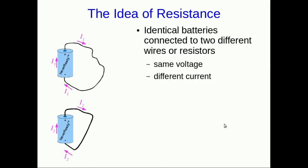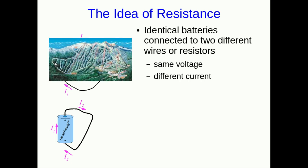So now we come to the idea of what resistance is. If you take two identical batteries and you connect them to two different wires or resistors, so you've got the same voltage being applied because these are identical batteries, but you're going to find that you will have different currents. Remember, the battery doesn't supply current. It supplies voltage. The current that results now depends on what you hook it up to.